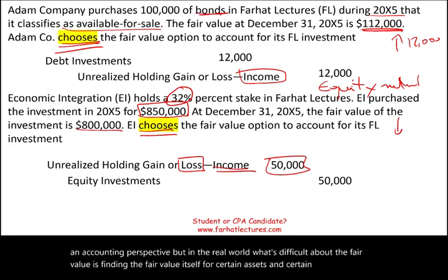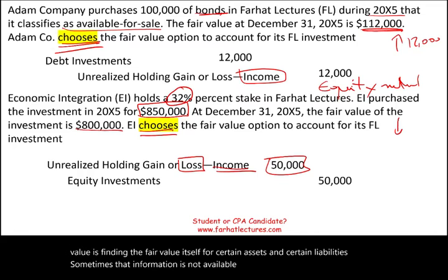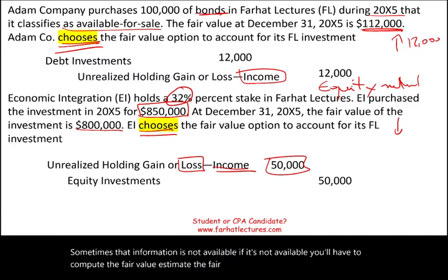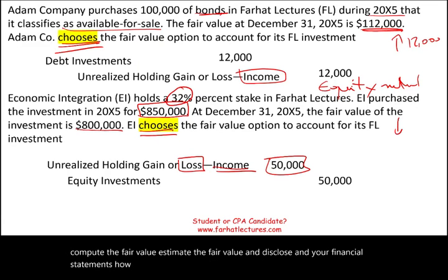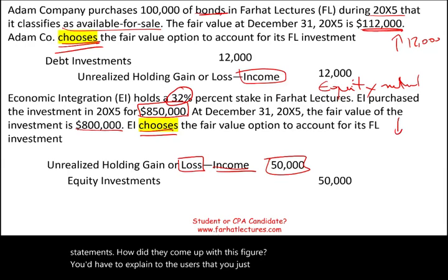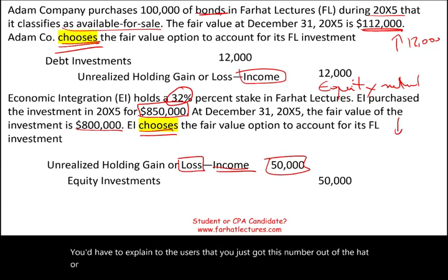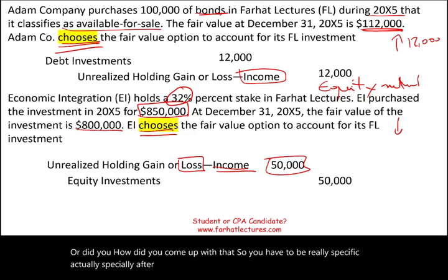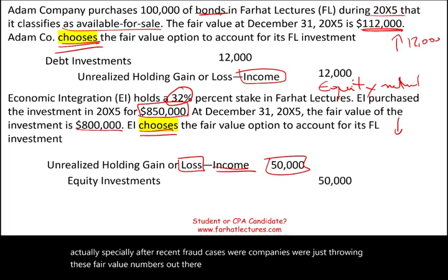Sometimes that information is not available. If it's not available, you'll have to compute and estimate the fair value, and disclose in your financial statements how you came up with this figure. You'd have to explain to users — did you just get this number out of thin air, or how did you come up with that? You have to be very specific, especially after recent fraud cases where companies were throwing fair value numbers out there to cook the financial statements.